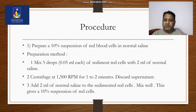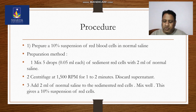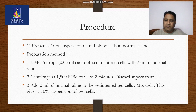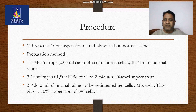Procedure — prepare a 10% suspension of red blood cells in normal saline: mix 5 drops of sedimented red cells with 2 ml of normal saline, centrifuge at 1500 rpm for 1 to 2 minutes, discard supernatant, add 2 ml of normal saline to the sedimented red cells, and mix well. Washing of cells is always required while performing this test for 100% accuracy, and saline wash should be done a minimum of 5 times. Then take the RBCs and conduct the test.